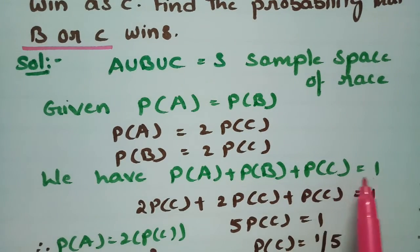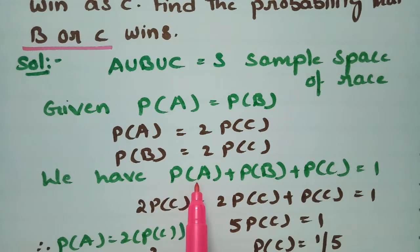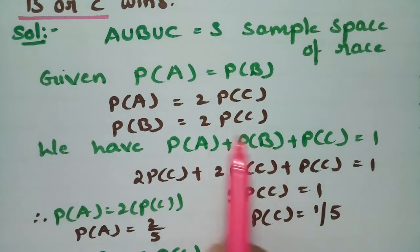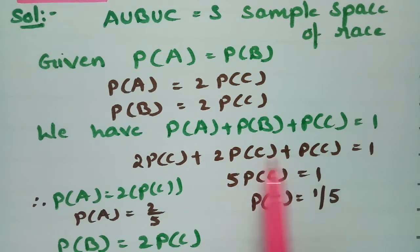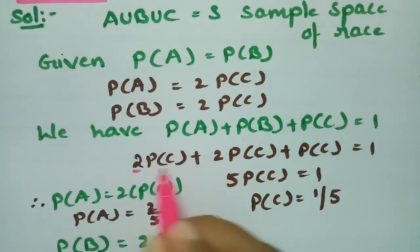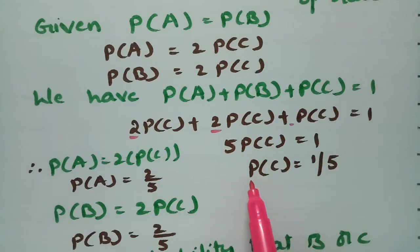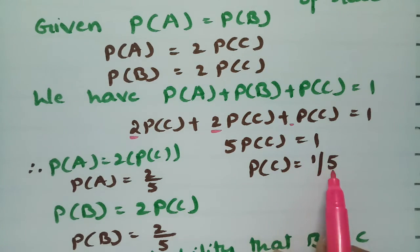The total probability is always equal to 1, so P(A) plus P(B) plus P(C) equals 1. Substituting, 2P(C) plus 2P(C) plus P(C) equals 1. After combining like terms, 2 plus 2 plus 1 gives 5, so 5 times P(C) equals 1. Therefore, the probability of C winning is 1 by 5.